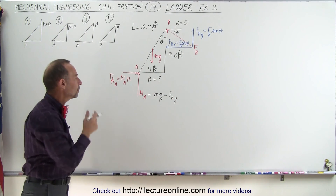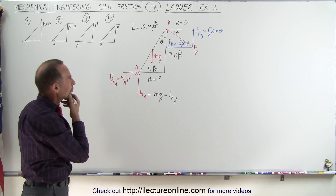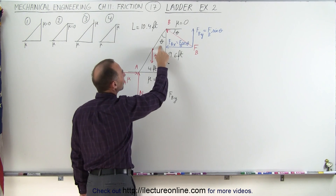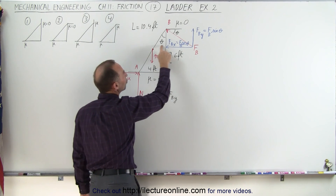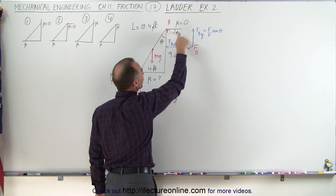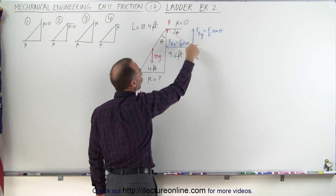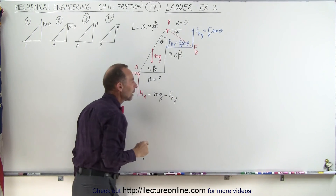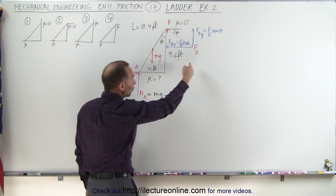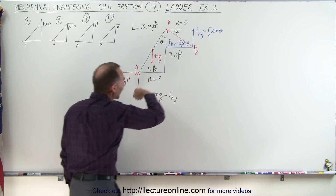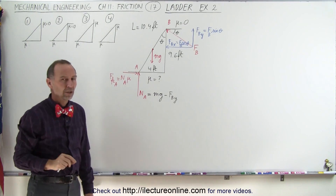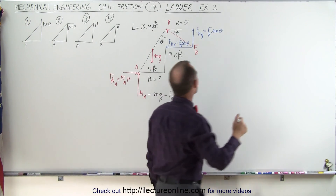So what we need to do here is as follows. We first need to find out what this angle is so we can express the y component and x component of B in terms of the force at B. We'll have to find the force at B so we can find the components, and then finally we'll have to find mu. So let's start with finding the angle.